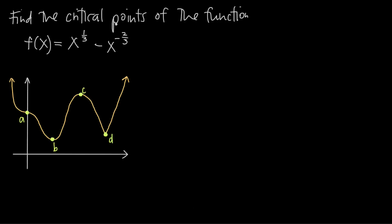When you're finding critical points, there are really two steps to the process. The first step is to identify potential critical points or critical numbers. The second step is to test each of those points to verify whether or not they are critical points — in other words, whether the function does in fact change direction from increasing to decreasing or from decreasing to increasing at that point.